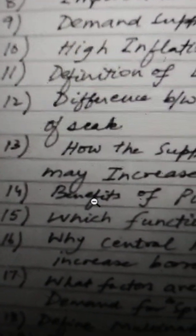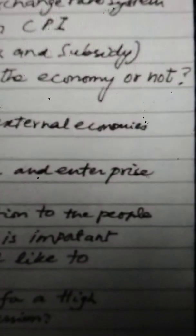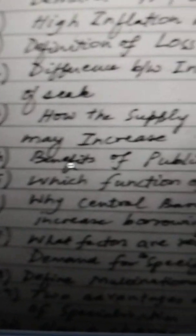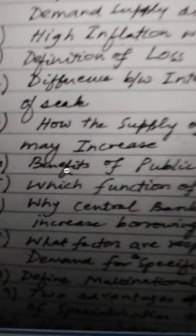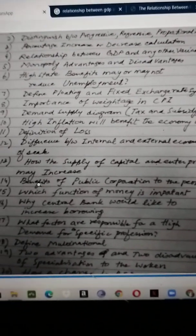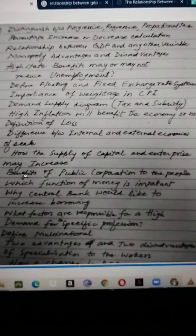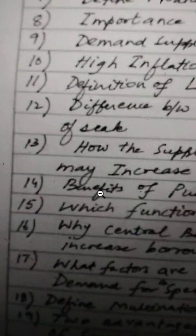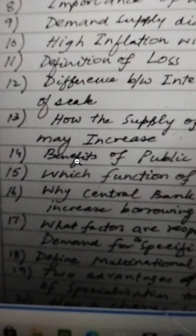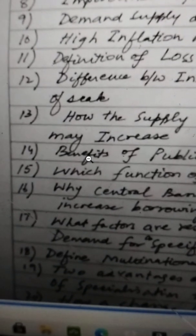Question number 13 — an important one for this year: how the supply of capital and enterprise may increase. The supply of capital may increase because of advancement in technology, more production of capital goods, and increasing overall productivity among workers and entrepreneurs. The supply of capital can also be increased by depending on imported machinery and equipment. If the government decides to increase the supply of capital, they may import it, giving a long-term benefit.